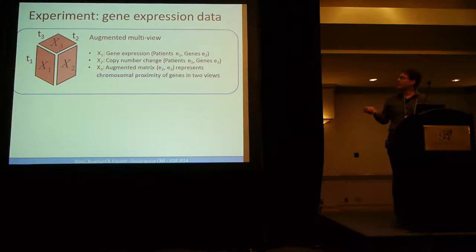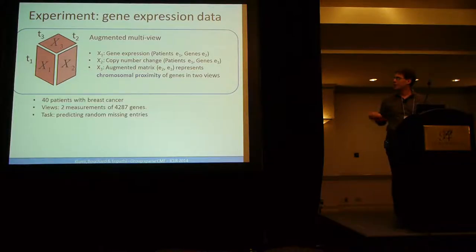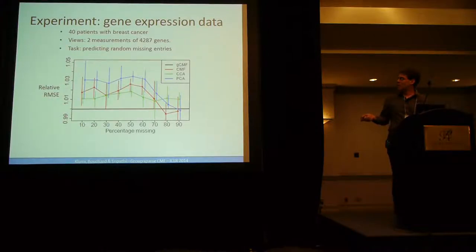The question is, is X3 useful? If we did not have X3, this would be a classical multi-view setting. So this is what we'll compare. We'll compare to CMF with no group sparsity, CCA with no chromosomal proximity, and PCA, independent views. By varying the number of missing data, in the horizontal line, this is the performance of our algorithm, and here you have the relative RMSE. So if you have a method which is above the black line, it's worse than the proposed method, and if it's below, it's better.